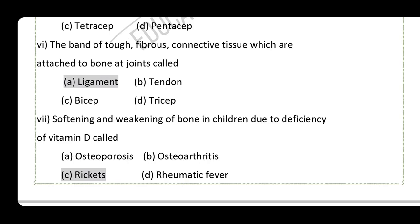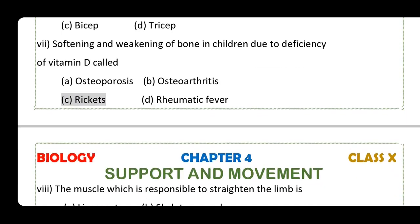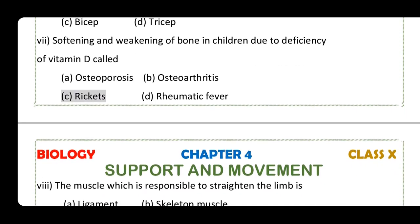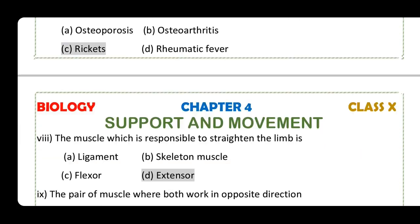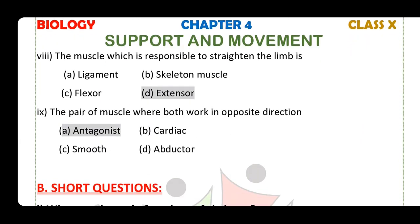Softening and weakening of bones in children due to deficiency of Vitamin D is called rickets.